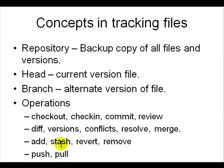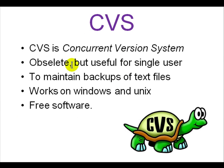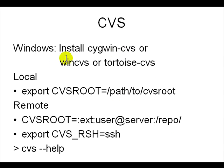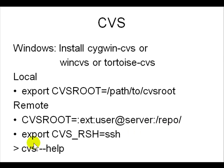CVS is obsolete but it is generally useful for a single user and useful to maintain backups of text files. CVS tracks every line that changed on every file and when it changed, so you can go back and see your file history. It works on Windows and Unix and it is free. To install it you get it with Cygwin, or install WinCVS or TortoiseCVS. You need to set the CVS root environment variable, which requires a username, server name, and folder name.